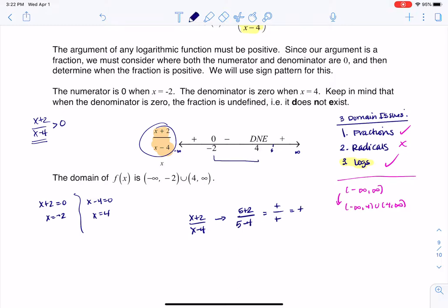Now plug in an x value between negative 2 and 4. I typically, when I can, plug in 0. So I'm going to plug in 0 to my rational argument and see what we get. If I plug 0 in, I have 0 plus 2 on the numerator and 0 minus 4 on the denominator.